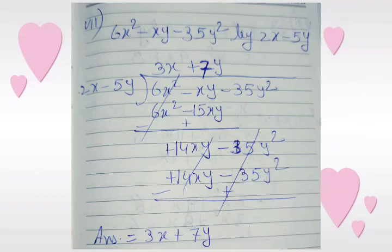Sub-part 8: 6x squared minus xy minus 35y squared divided by 2x minus 5y. We multiply 2x minus 5y with 3x and get 6x squared minus 15xy. We change the sign of the last line — the first term is cancelled — and after solving the second term we get plus 14xy. We copy down minus 35y squared.